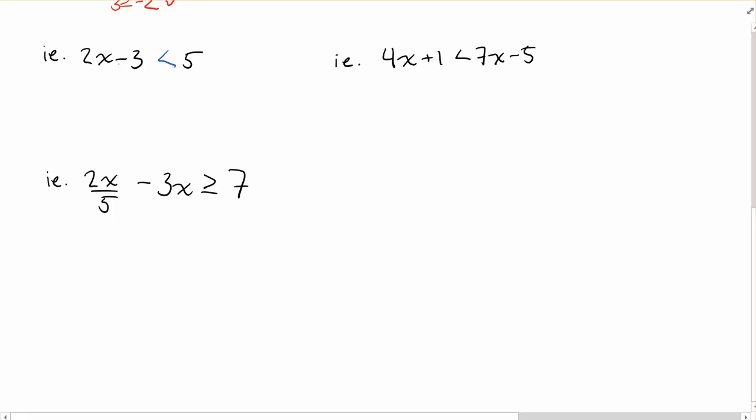Solving this equation, 2x minus 3 is less than 5. Thinking as if this was an equal sign, I want all the numbers on one side, the x's on the other. I'm going to add 3 to both sides. I'll get 2x is less than 8. That's 2 times x, so I'll divide by 2 on both sides. x is less than 4. And you're done. That is your answer.